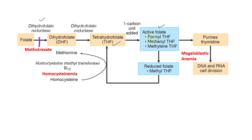The tetrahydrofolate forms active folates which take part in purine and pyrimidine synthesis, and they then form reduced folate — that is methyl-THF — which helps in regeneration of THF via the enzyme homocysteine methyltransferase. This enzyme helps in conversion of homocysteine to methionine and requires vitamin B12. Deficiency of either folic acid or vitamin B12 will result in increased homocysteine in the blood as this step will be blocked, which can result in cardiovascular disease, stroke, DVT, and pulmonary embolism.